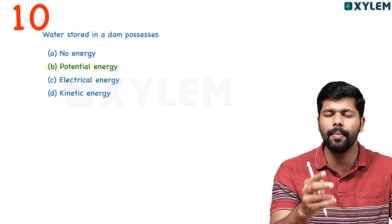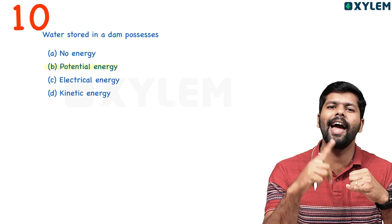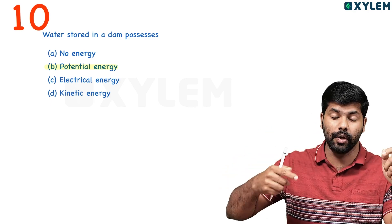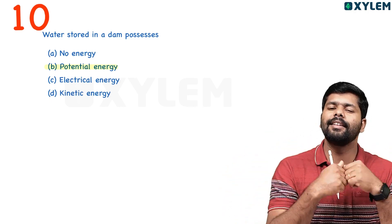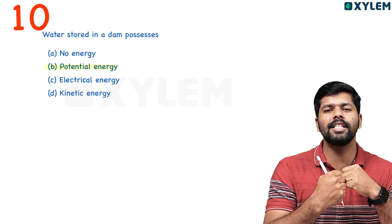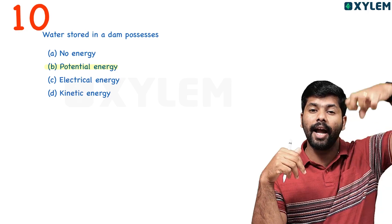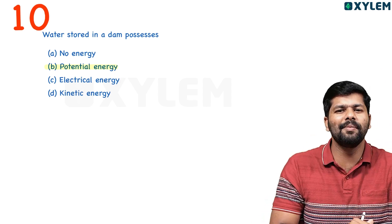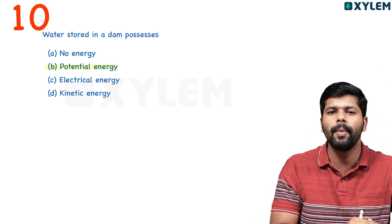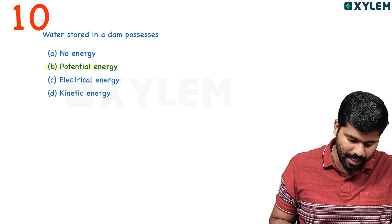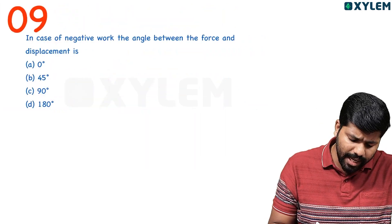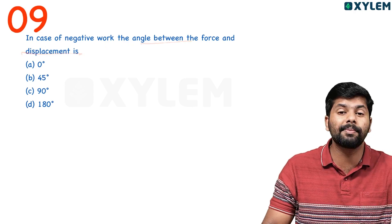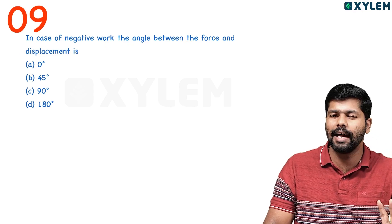Potential energy is due to position and configuration. When you stretch a rubber band, it is potential energy due to configuration. When an object is at a high level, it is potential energy due to position.